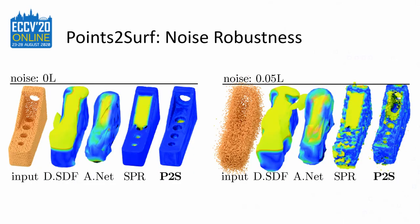Now let's look at noise robustness. We have zero noise on the left and strong noise on the right. For DeepSDF and AtlasNet, the generalization issues overshadow the noise. SPR is accurate overall but fills in the large hole. Our method is able to reconstruct that hole and even the small ones. With strong noise, SPR gets bumpy while Points to Serve tends to produce some topological noise.